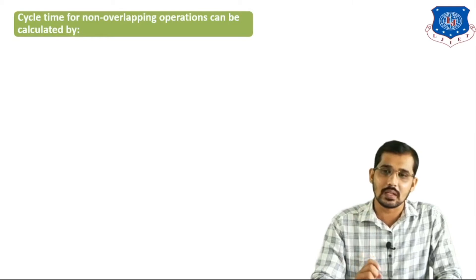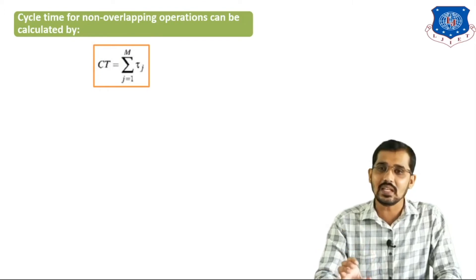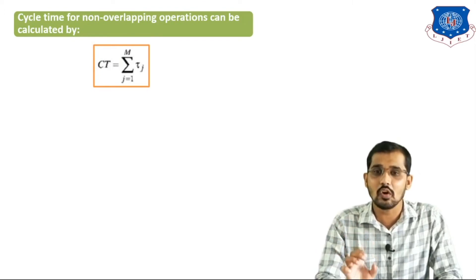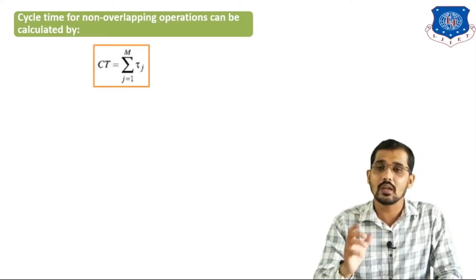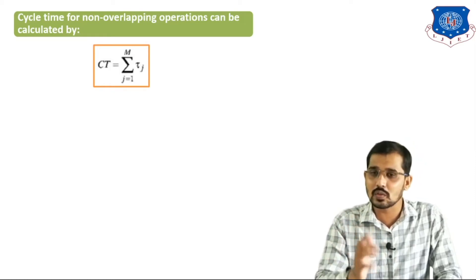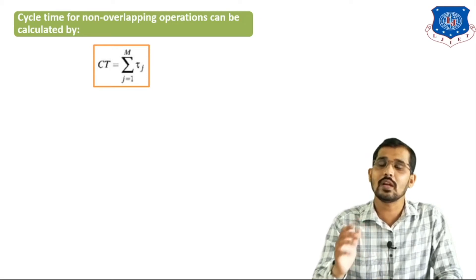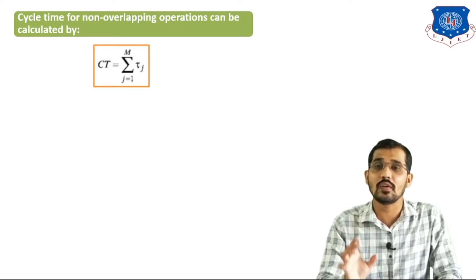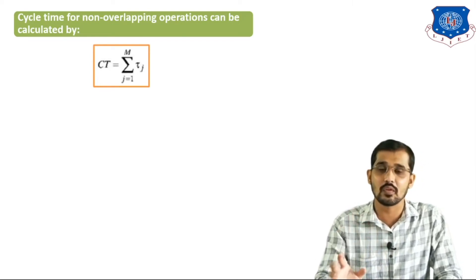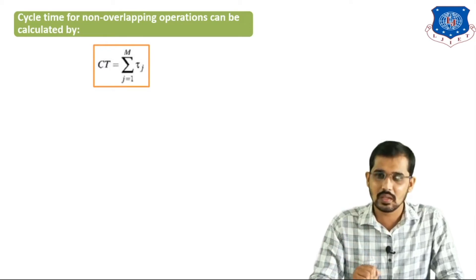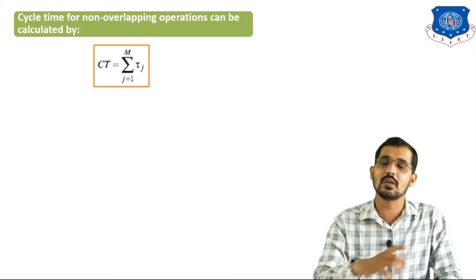Now, how to calculate cycle time for non-overlapping operation. The cycle time Ct is given by the summation of all processing times: Ct equals summation of Tj, where j is 1 to M, and M is the number of stages. If the process includes transfer time, you must also consider it; if without transfer time, there is no need to consider it.